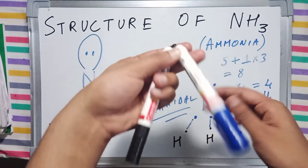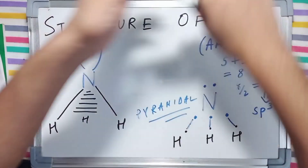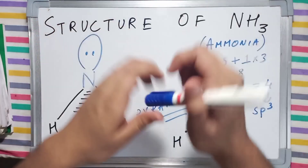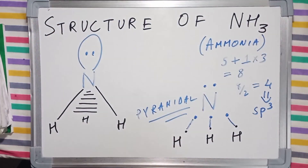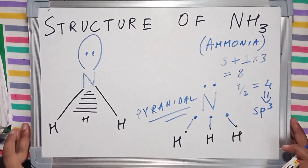So this was the structure of ammonia. It is pyramidal in structure. Thank you, and I will see you guys in the next video.